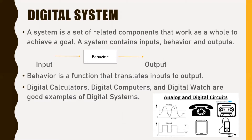Input is the data that we put into the system, while behavior is the process that is being performed on the input data, and output is the data that we get at the end of the processing function. This is the processed form of the data.